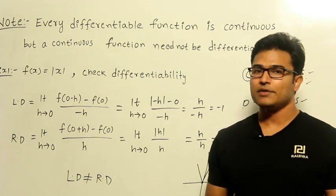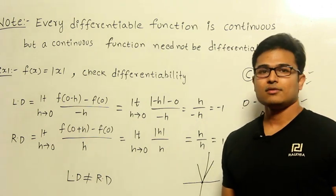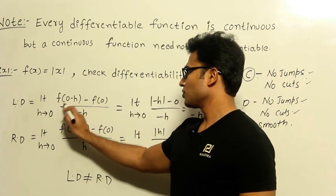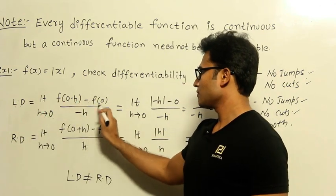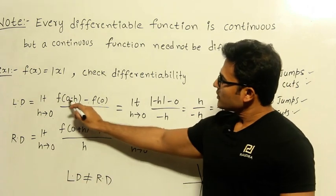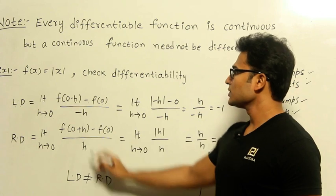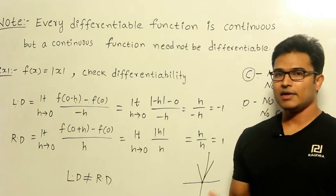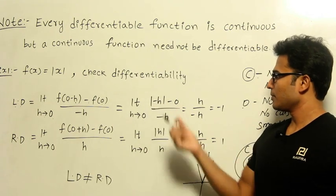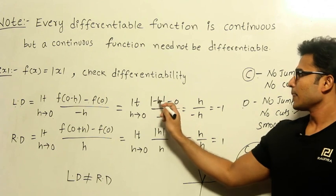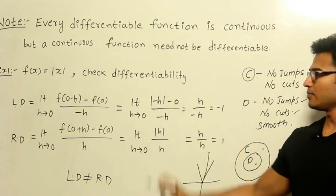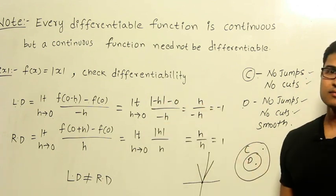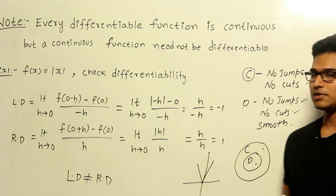Now how to find it out? Find out the left derivative, find out the right derivative, and then see if they are equal or not. According to the definition, the left derivative is: limit h→0 of [f(0−h) − f(0)] / (−h). Now 0−h is just −h. So substituting mod(−h) − 0 divided by −h. Since h is a small positive number, −h is negative, so to convert it back to positive we get h. So it is h/(−h) = −1.